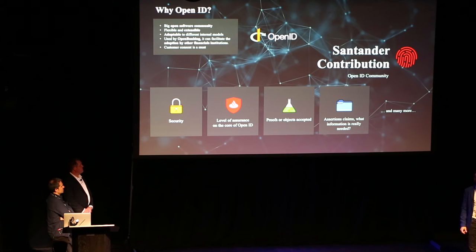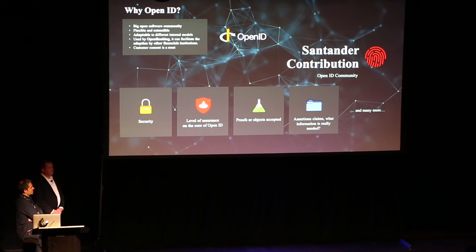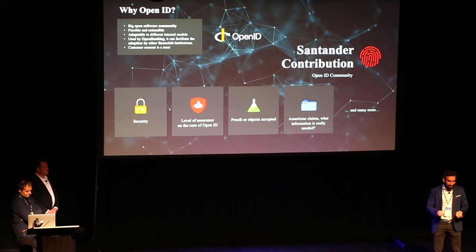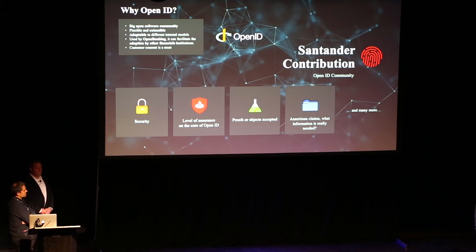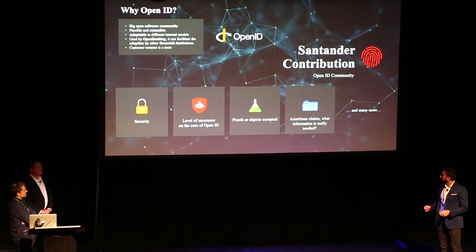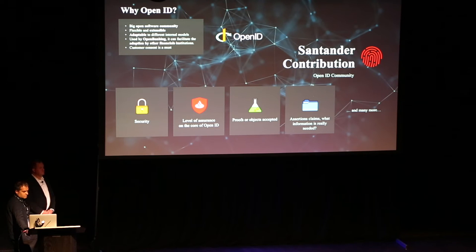We are adding level of assurance to the core of OpenID. We also support different proofs: in some cases you can do a zero-knowledge proof — I prove I'm above the required age to buy alcohol without telling you my exact age. In other cases, you have verifiable credentials. We are adding all that flexibility in the protocol. And then we have assertion claims — a full syntax we are creating so that as a customer, I can share different proofs of different things without actually releasing any data.